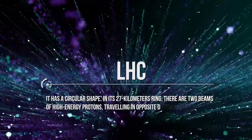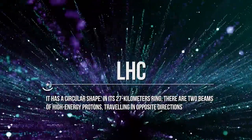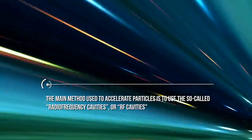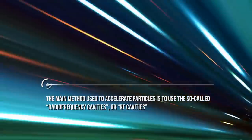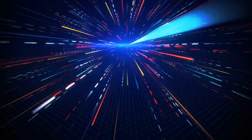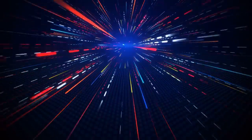The LHC has a circular shape. In its 27 km ring, there are two beams of high-energy protons traveling in opposite directions. In the collider, these particles are accelerated up to a speed of almost 100% of the speed of light. How is this done? The main method used to accelerate particles is to use the so-called radiofrequency cavities, or RF cavities. In simple terms, these are tubes placed all along the collider, containing an electric field which changes direction periodically.